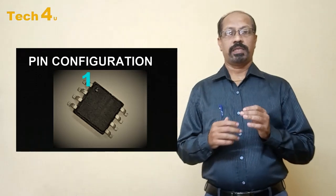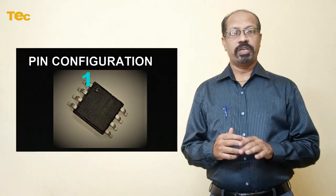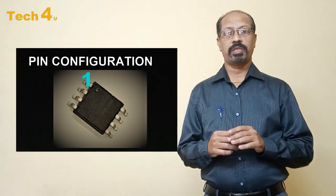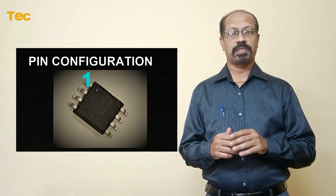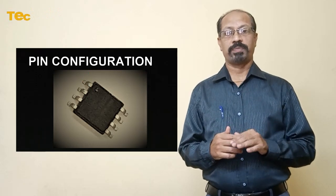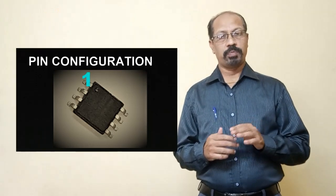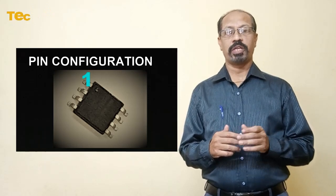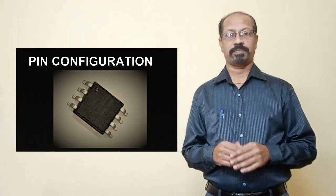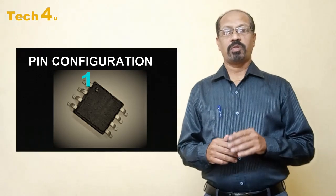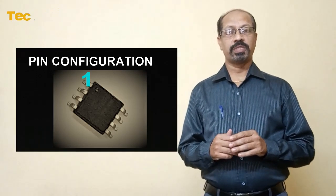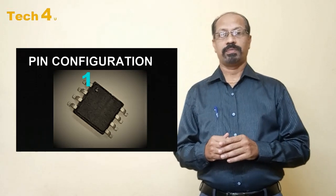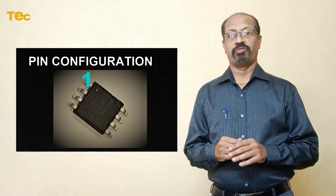When chip select is brought low, the device will be selected. Power consumption will increase to active levels and instructions can be written to and data read from the device. After power-up, chip select must transition from high to low before a new instruction will be accepted. Input of the chip select must take the positive supply level at power-up and power-down. This is the configuration of pin number 1.